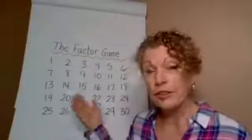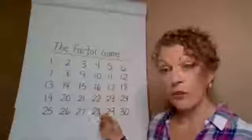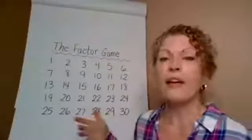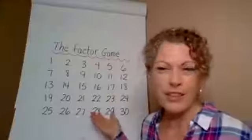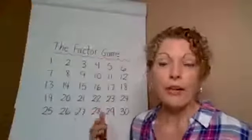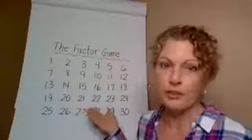The way this works, it's simple setup. You just number from one to 30. And then the way it works is player one gets to choose a number. And let's say I choose 22. And I get 22 points because I choose 22.